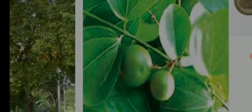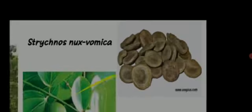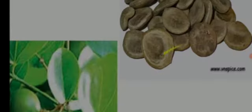The leaves are prominently trinerved — you can see there are three equally thick nerves or veins starting from the base of the leaf towards the apex. This is the fruit, and these are the medicinally used seeds. This plant is commonly called as nux vomica or poison nut, or kasarkai in Kannada, because the seeds look like kasu or coins.